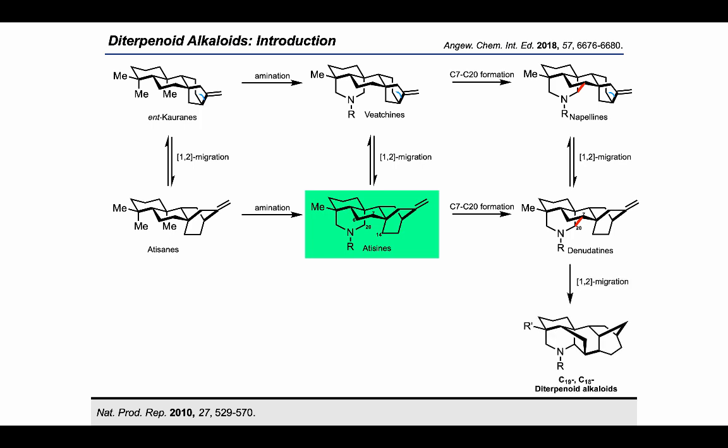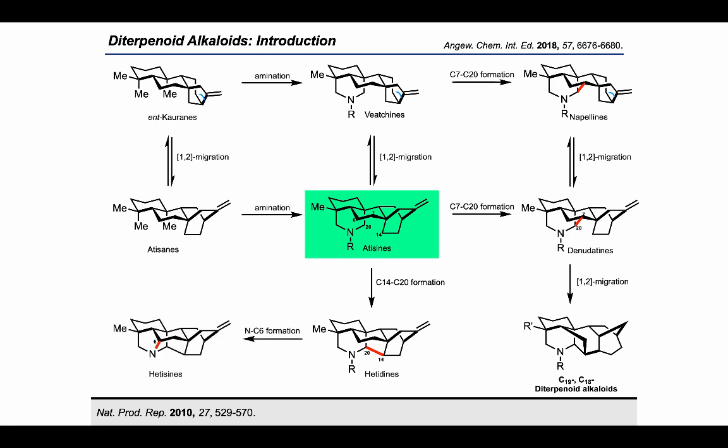C20–C7 bond formation could enable napline and denaphtaline respectively. If the denaphtaline undergoes 1,2-migration, C19–C18 diterpinoid alkaloids can be achieved. Bond formation between C20 and C14 enables adicine. And the nitrogen C6 bond formation can afford the most caged scaffold, azicines. As we can see from the proposed biogenesis of diterpinoid alkaloids, artisanes are at the center of the map.